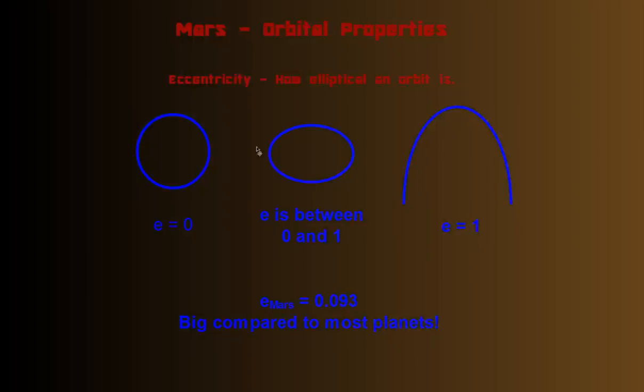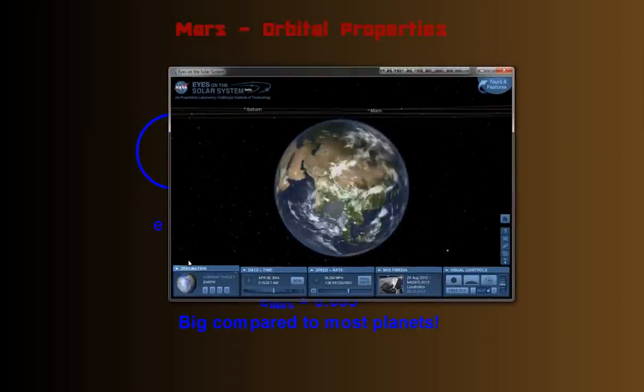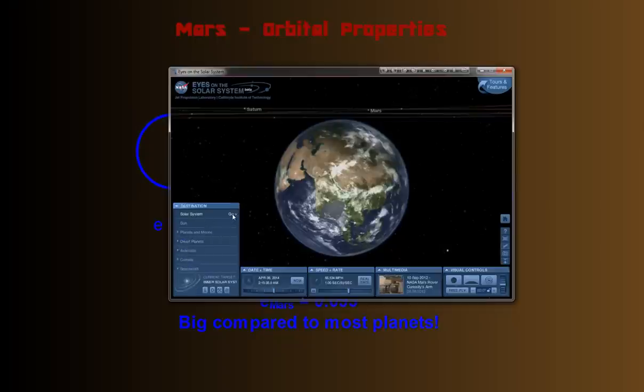So Mars' eccentricity is 0.093. You can see it's very close to zero, much closer to zero than one, so it looks pretty small. In fact, when you look at Mars' orbit, let's go back to solar system view.